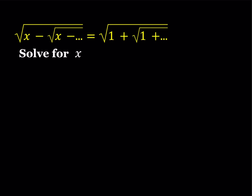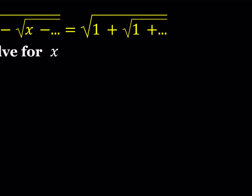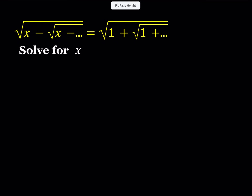Let's start by using some substitution. I'm going to call the right-hand side expression a. When you call something like this, it basically contains itself — similar to infinite fractions and nested radicals. So if the whole thing is called a, then I can just square both sides.